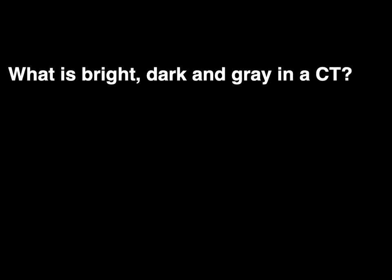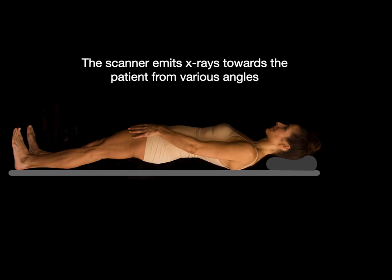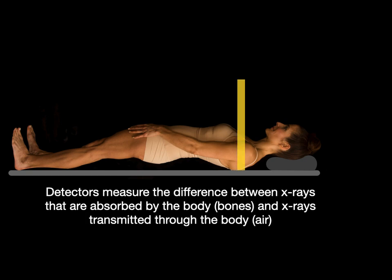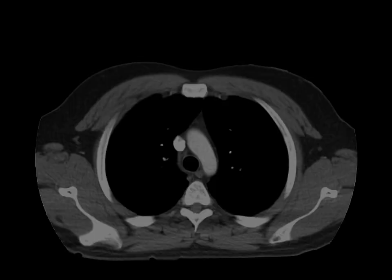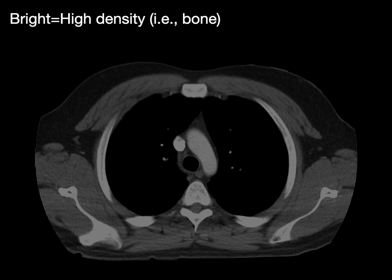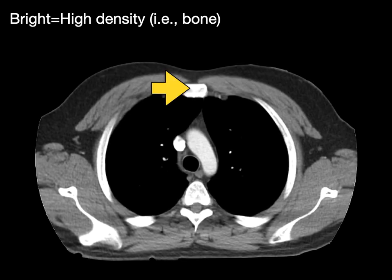What is bright, dark, and gray in a CT? The scanner emits x-rays towards the patient from various angles — that yellow line represents the x-ray. The detectors measure the difference between x-rays absorbed by the body and x-rays completely transmitted through the body. A bright area indicates high density, called high attenuation — bones such as the sternum, ribs, and vertebrae appear bright white. The whiter it is, the more dense it is.